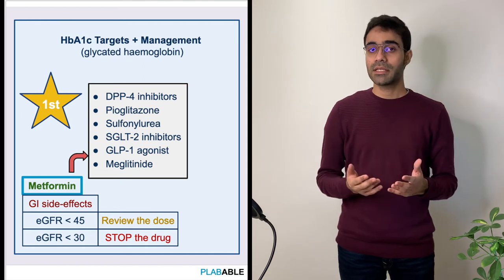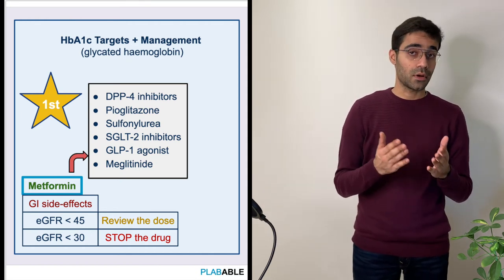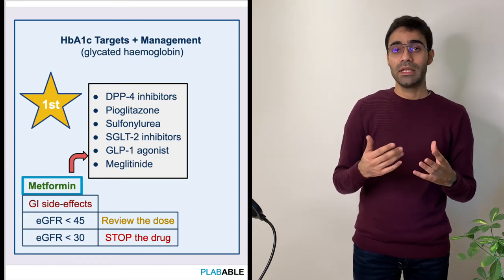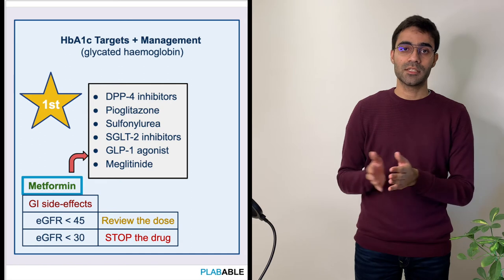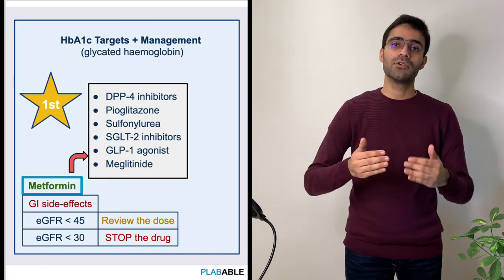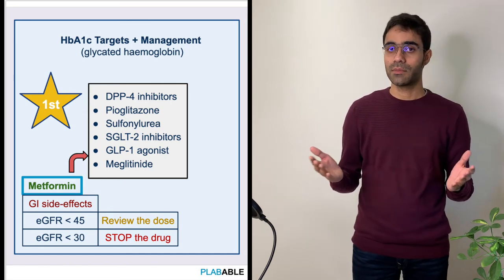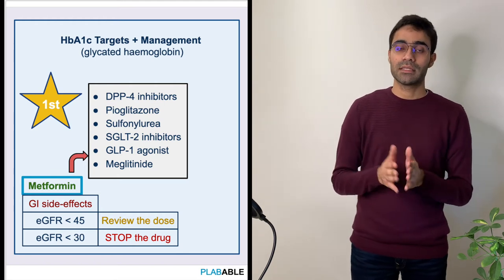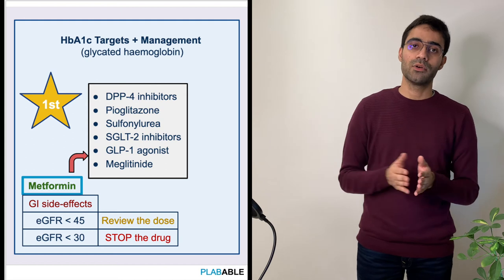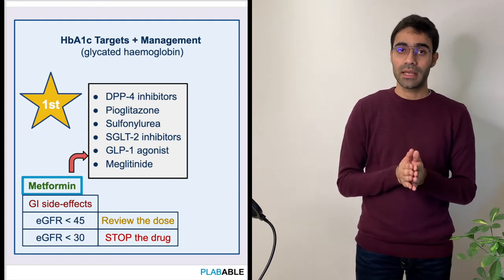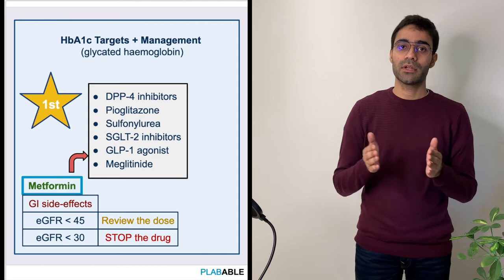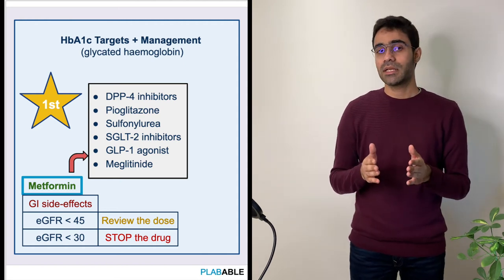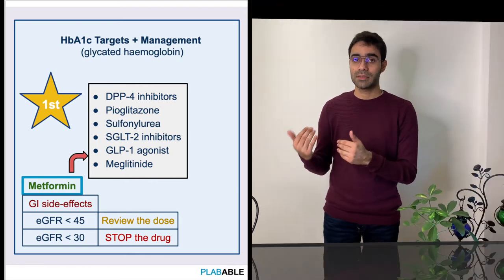Some contraindications of metformin include chronic kidney disease. Patients who have a GFR below 45 mean we need to review the dose of metformin, and if the GFR goes below 30 then we need to stop the drug. Another very important point is that patients undergoing investigations with iodinated dyes need to stop metformin 48 hours prior to the procedure.